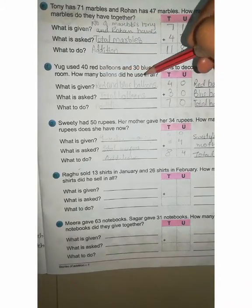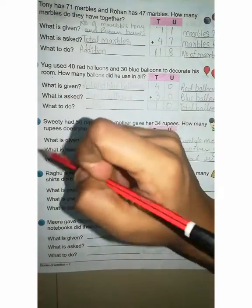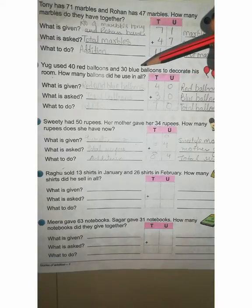F. You used 40 red balloons and 30 blue balloons to decorate his room. How many balloons did he use in all? Now you can see here. Question asking, you used red balloon and 30 balloons blue for decorate his room. How many balloons did he use in all? It means do addition. And 2 color balloon given, red, blue.